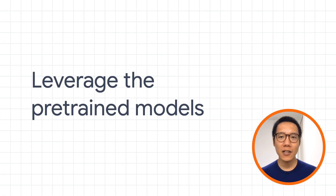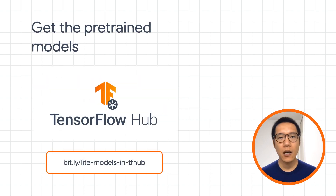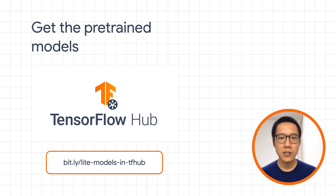Now you know how to train a TensorFlow Lite model and integrate it into an Android app. But you don't have to train a model by yourself all the time. In many cases, you can just leverage pre-trained models. You can go to TensorFlow Hub to download pre-trained TensorFlow Lite models. TensorFlow Hub is an open repository for TensorFlow models, just like GitHub for open source software.